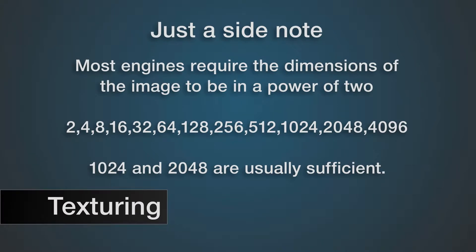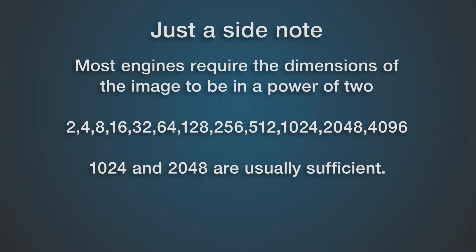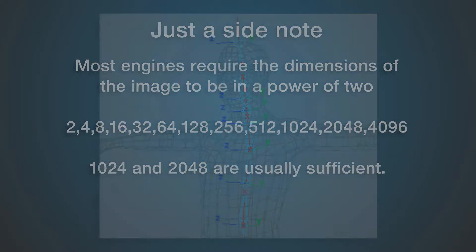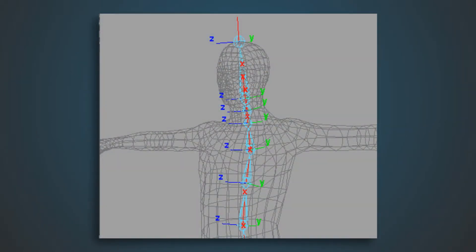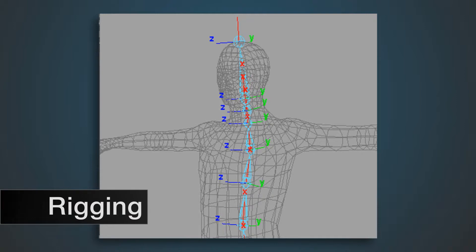As a side note, most engines require the dimensions of the image to be in a power of 2 — so 2, 4, 8, 16, up to 256, 1024, and so on. But 1024 and 2048 are usually sufficient; you probably will not go beyond that for a video game.